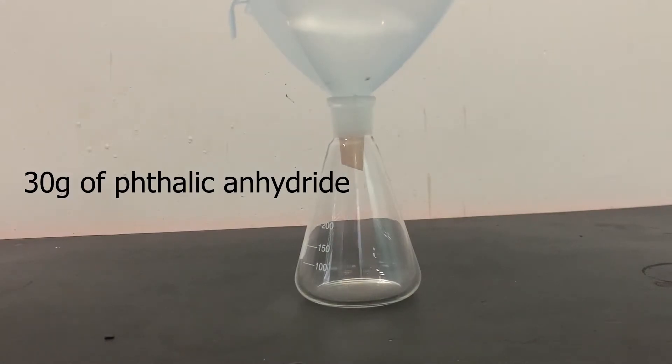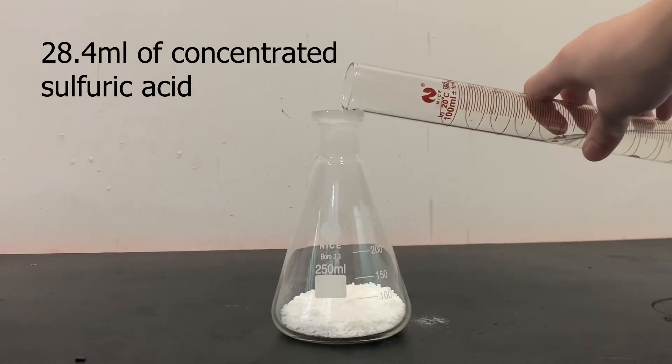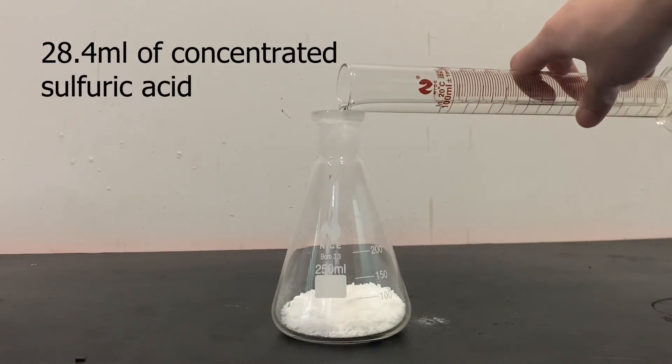To get started, I added 30 grams of phthalic anhydride to a 250 milliliter flask, which was then followed by 28.4 milliliters of concentrated sulfuric acid.